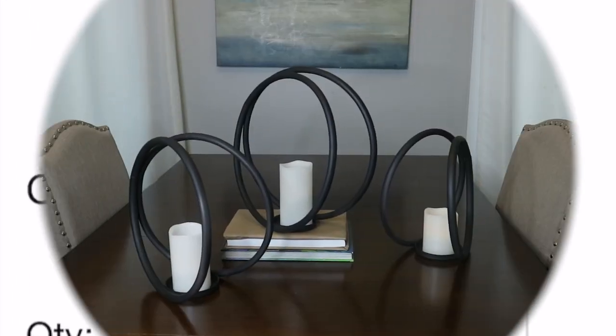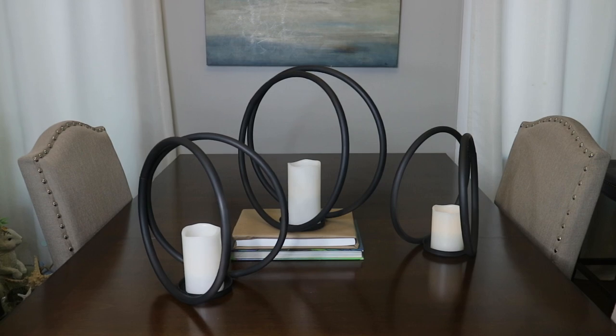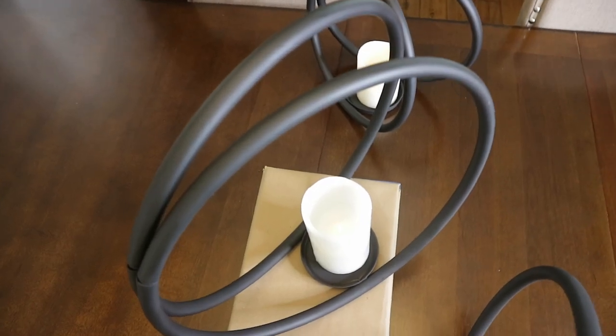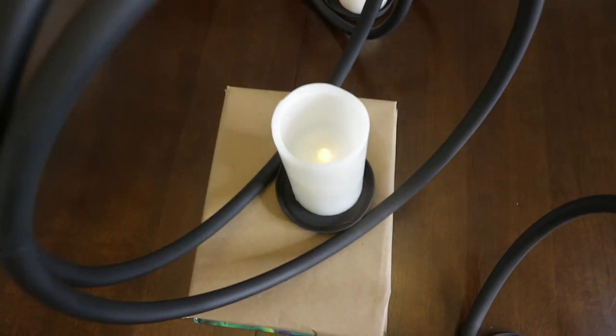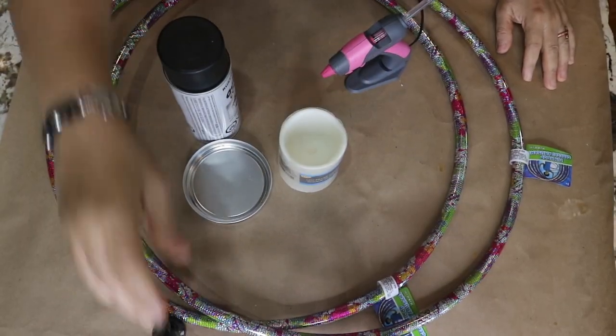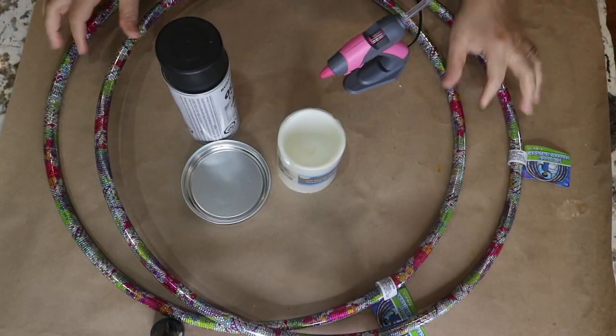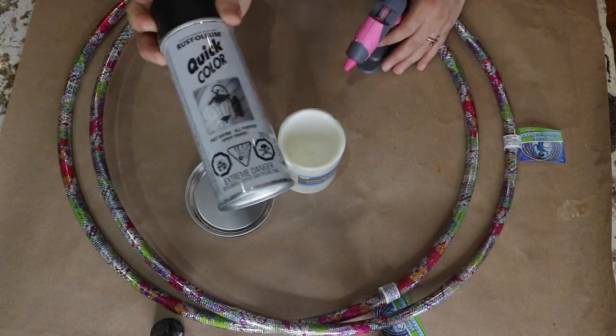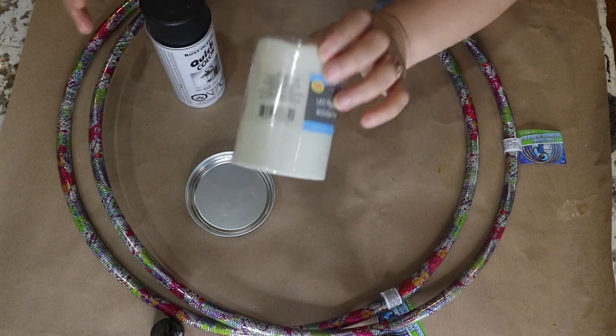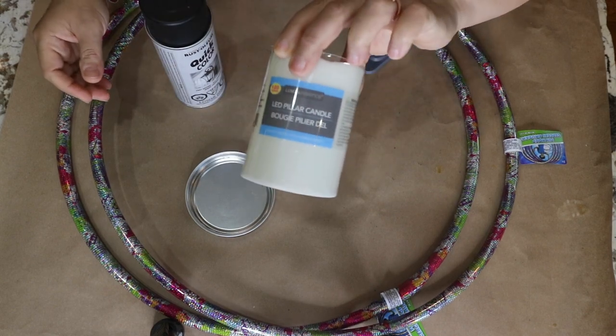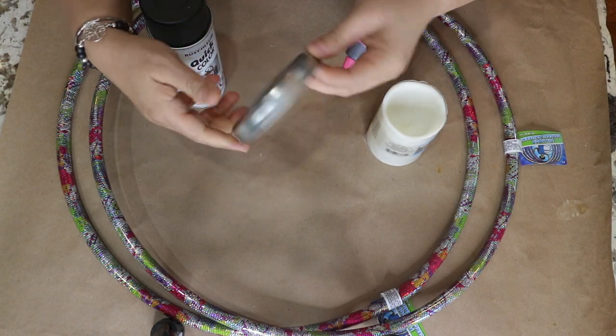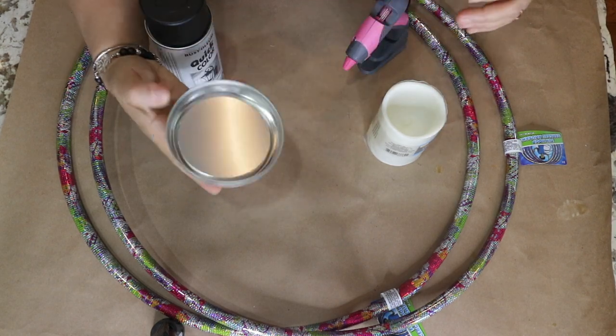Now let me show you how easy and affordable this project was. Here I am showing you what I needed for each candle holder. I picked up six of the small size hula hoops from Dollar Tree, this black spray paint that I already had, and this LED pillar candle from Dollar Tree as well.